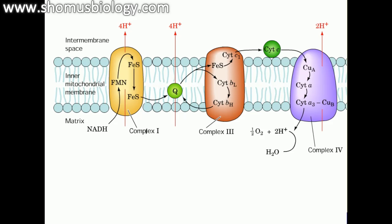Now we will see an animation of the electron transport chain in the mitochondrial inner membrane. There are four different protein complexes embedded in the inner membrane involved in electron transport, ultimately reducing oxygen to water and generating ATP. We will focus on the role of complexes 1, 2, and 3 — examining their structures and how many protons they pump into the intermembrane space.